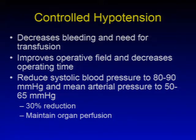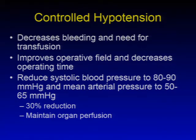With controlled hypotension, the goal is to decrease bleeding and need for transfusion, to improve the operative field and decrease operating time, and to reduce systolic blood pressure to 80-90 mmHg and mean arterial pressure to 50-65 mmHg. There is a 30% reduction of the overall mean arterial pressure from baseline.